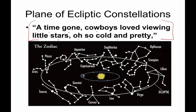Now, it's a nonsense little saying, but it will help you remember which constellations are in which order. So we are going to start with Aries, Aries is right here. A time gone: Aries, Taurus, Gemini. Cowboys loved viewing little stars: Virgo, Libra, Scorpius, Ophiuchus, Sagittarius. Oh so cold and pretty: Capricorn, Aquarius, Pisces. A time gone, cowboys loved viewing little stars, oh so cold and pretty.